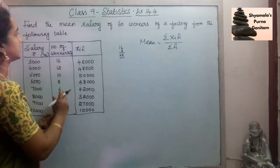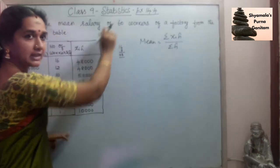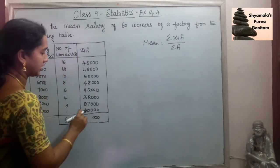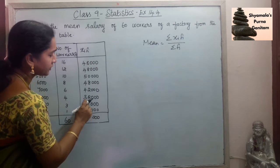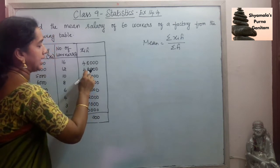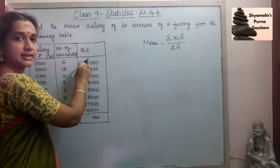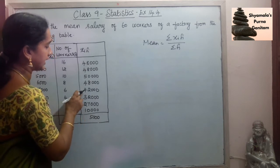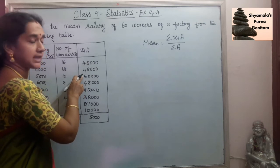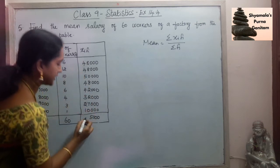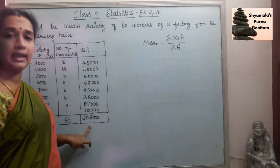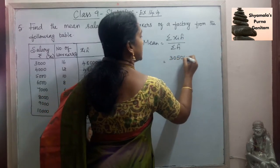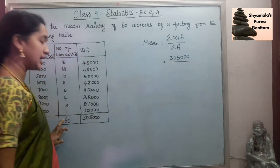We need to find both Sigma XiFi and Sigma Fi. Sigma Fi is nothing but 60, which is already given in the question. Now if we find the total of the XiFi column — adding all the values — we get 3,05,000. So Sigma XiFi is 3,05,000, which goes in the numerator, divided by Sigma Fi which is 60.